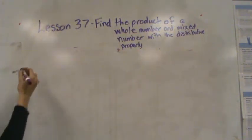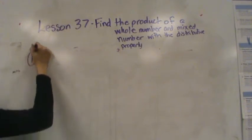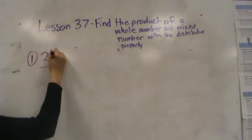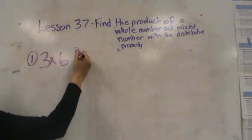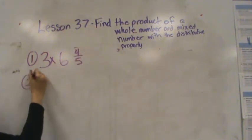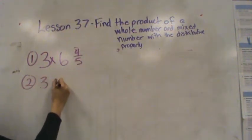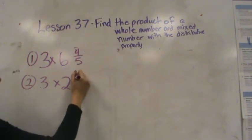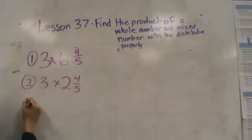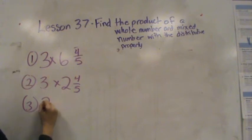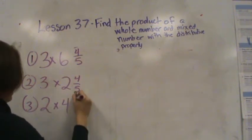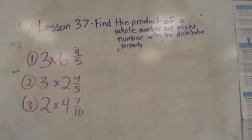Now it's your turn. So these are three problems I would like you to solve. 3 times 6 and 4 fifths. That's your first one. Your second one is 3 times 2 and 4 fifths. Your third one is 2 times 4 and 7 tenths. Make sure you put those in a mixed number if you need to regroup to do that. We'll see you tomorrow. Bye.